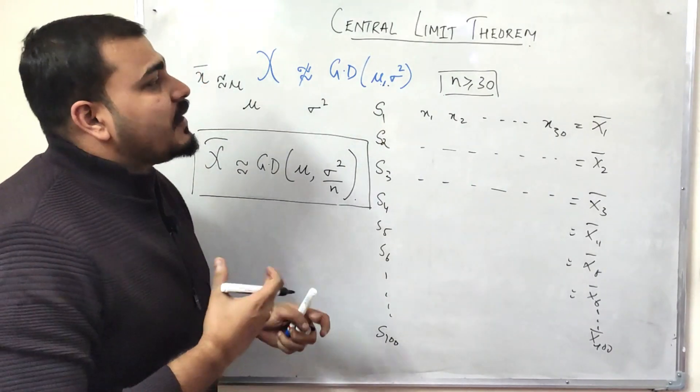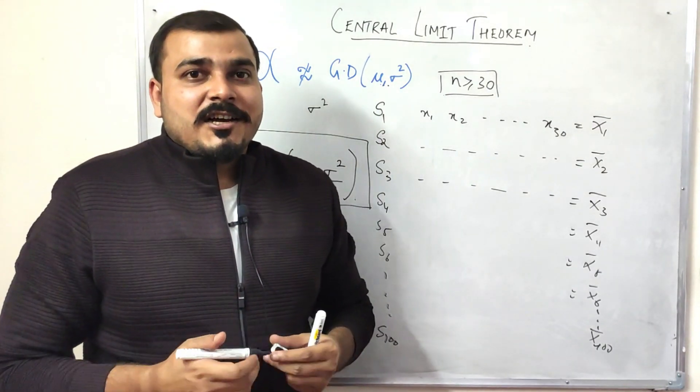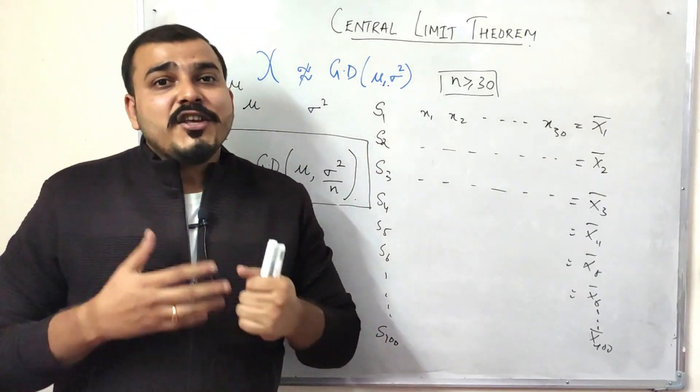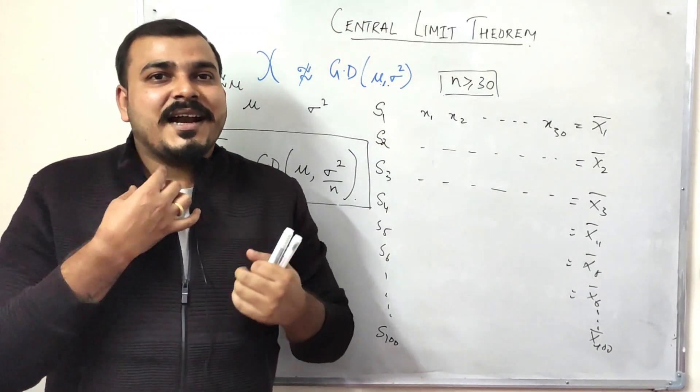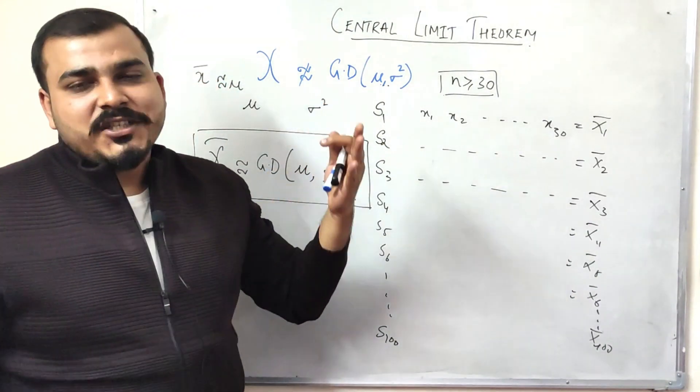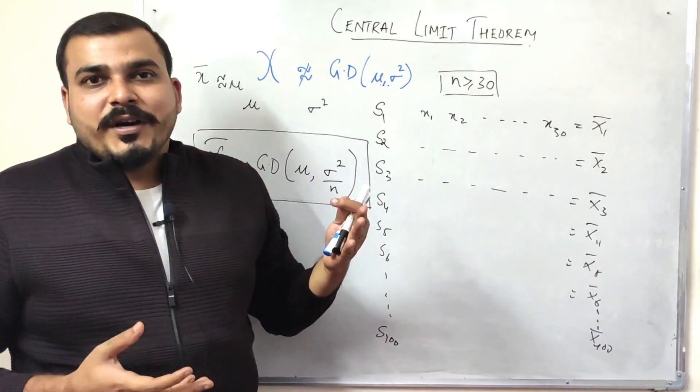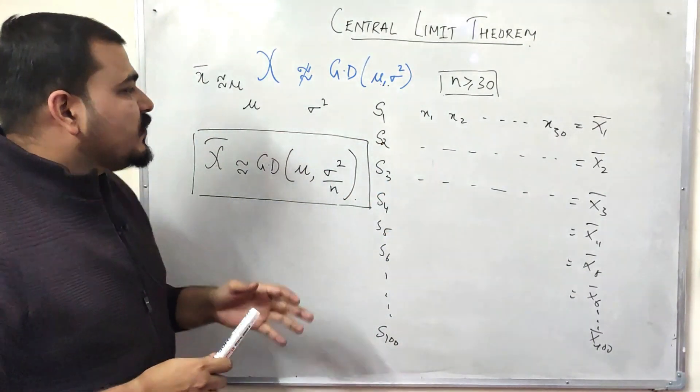And this is what Central Limit Theorem specifies. That is the reason whenever you have your dataset with some number of features along with some number of data points.